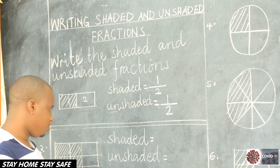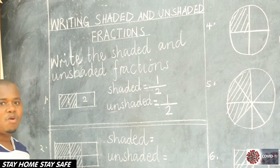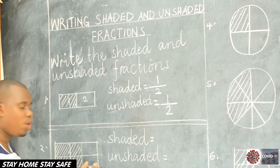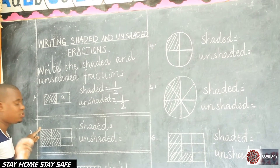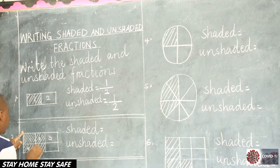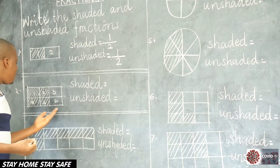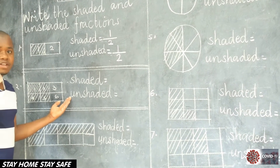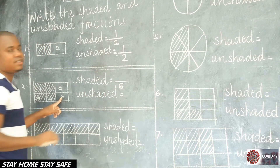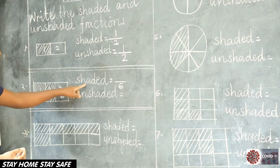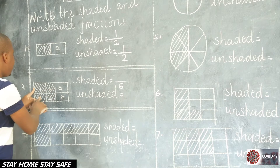Are you getting me, children? What do we do first? Count all the parts that make up the whole diagram. For example, this one — how many parts are there? We have one and then two. So this whole diagram is made of two parts, and the number of parts that make up a diagram will give us the denominator. Then the numerator will be the required number — either shaded or unshaded. We count one, two, so we write two as the denominator. Then we count how many parts are shaded — one. So the shaded fraction here is a half.